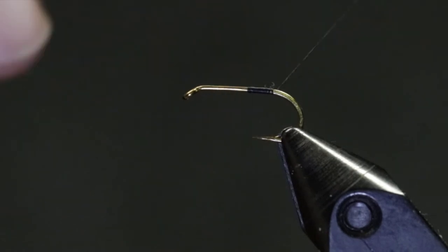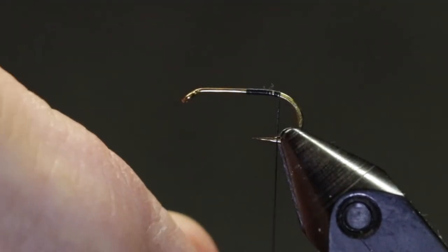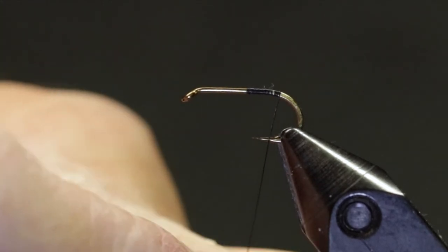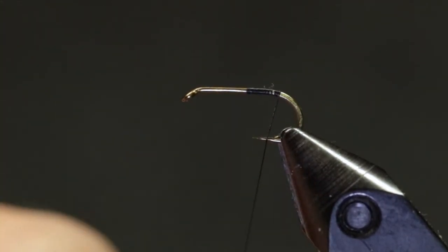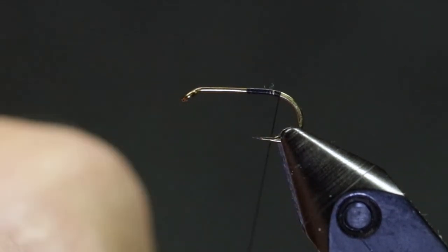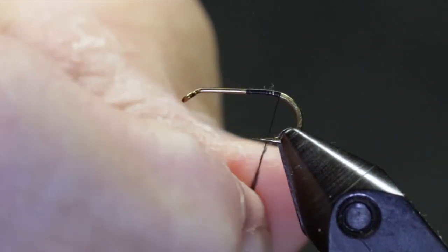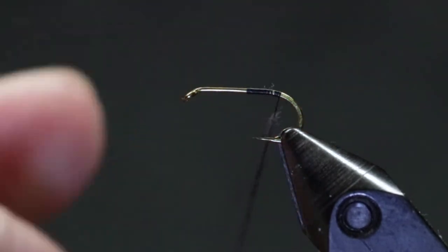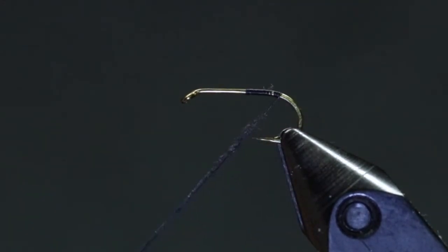Now it's time to tie the rear segment of the fly. For the dubbing I'm using superfine in black, but you can use any dry fly dubbing that you want. After dubbing the thread, begin wrapping up the hook shank until you reach the original tie-in point. Now wrap back toward the bend, ending not quite as far as when you began.